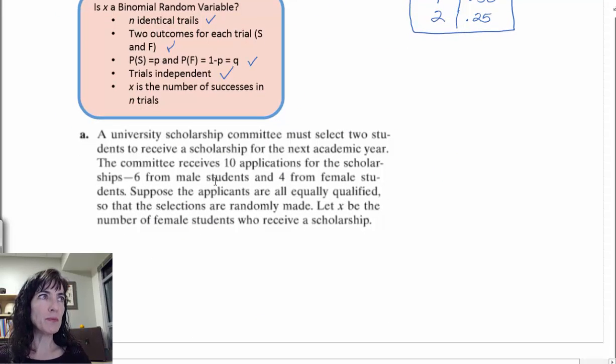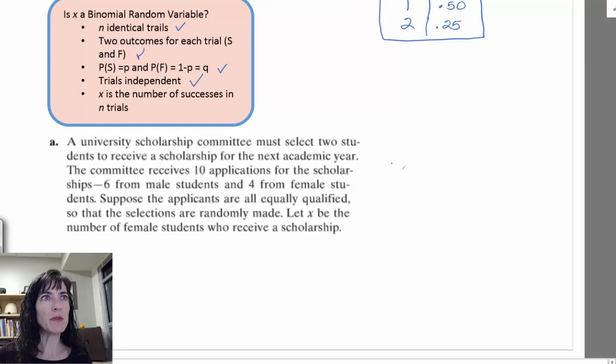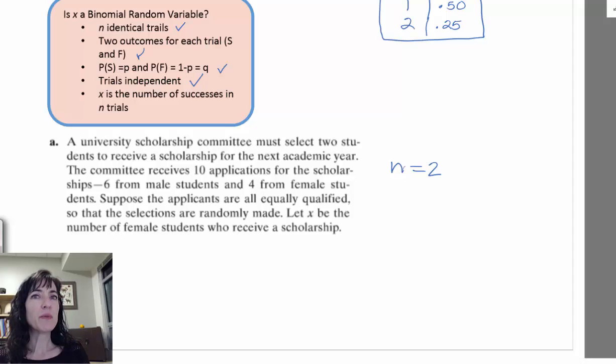So here's another example. A university scholarship committee must select two students to receive a scholarship for the next academic year. So that tells me that my N is going to be two, because I have two people that they're going to select. The committee receives ten applications for the scholarship. Six from male students and four from female students. Suppose the applicants are equally qualified so that the selections are randomly made. Let X be the number of female scholarship winners, the number of female students who receive a scholarship.